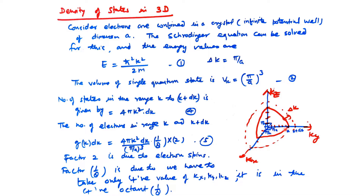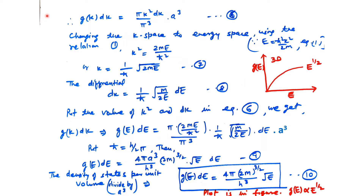The number of states in the range K to K plus dK can be considered as a spherical shell, so it will be 4πK²dK. The number of electrons in this range G(K)dK is 4πK²dK divided by (π/A)³, multiplied by 2 for spin up and spin down, and by 1/8 since we take only one octant — positive values of Kx, Ky, and Kz. This gives G(K)dK = πK²dK / (π³/A³).